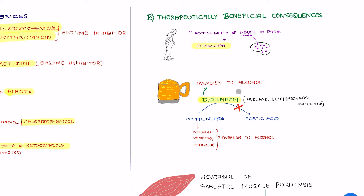The second example is aversion to alcohol. If you administer disulfiram — which is an aldehyde dehydrogenase inhibitor — please remember disulfiram is used as aversion therapy to alcohol. Aldehyde dehydrogenase is required for the conversion of acetaldehyde to acetic acid. Disulfiram, being an aldehyde dehydrogenase inhibitor, prevents this conversion. So the concentration of acetaldehyde increases, and this accumulated acetaldehyde produces adverse consequences like nausea, vomiting, and headache, which are responsible for aversion to alcohol.